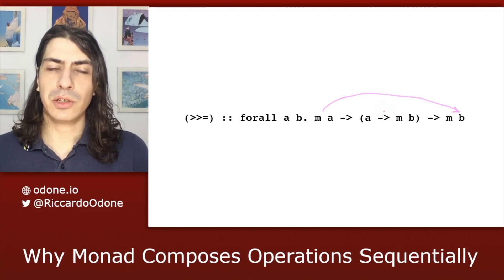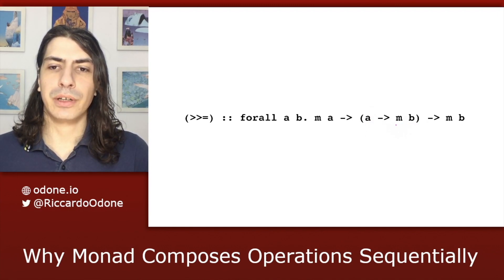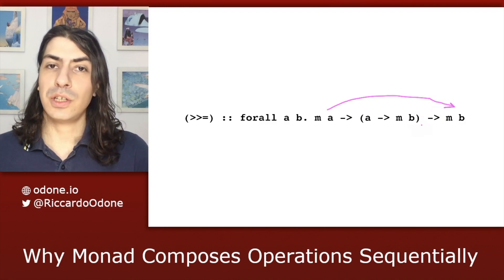Notice that the second argument to bind is a function that we will call step function, which takes an a and returns our future value here. So, in other words, to go from present to future, we just need to apply this step function here.